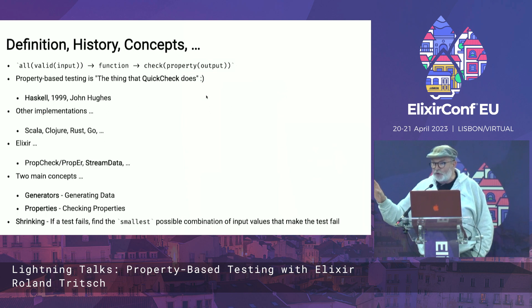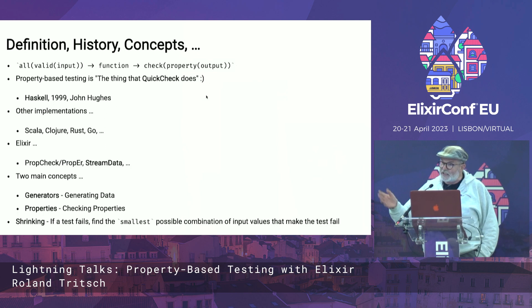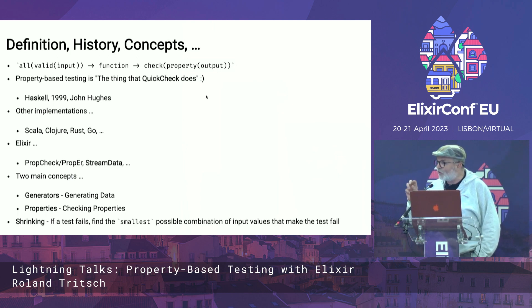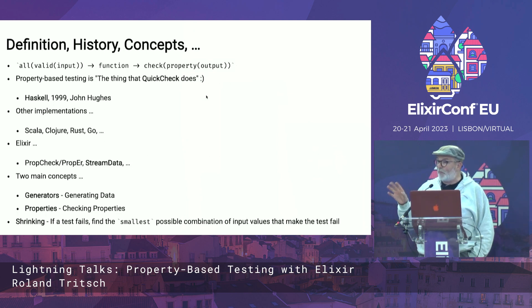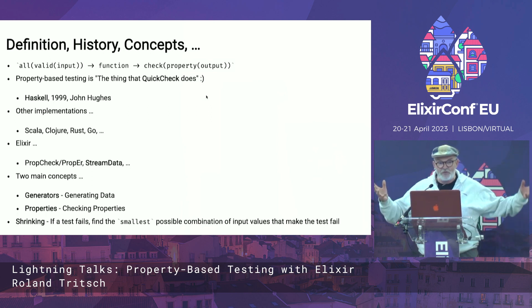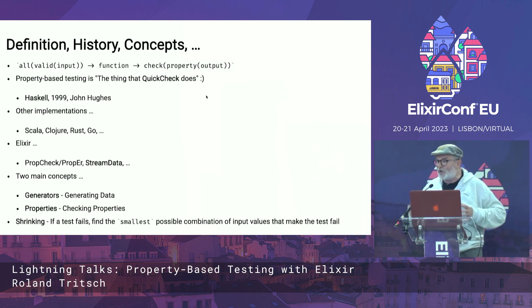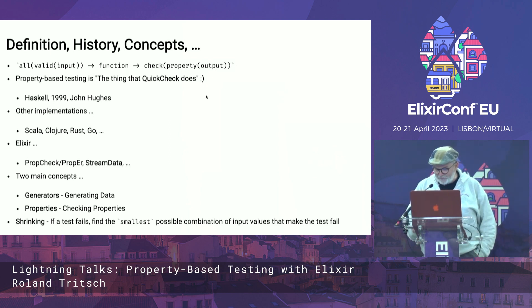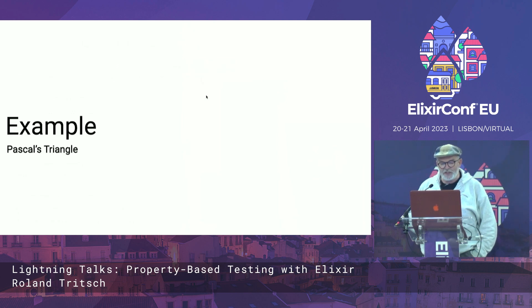The two main concepts in every one of these property-based testing frameworks are generators and properties. Generators create the values; properties check that the properties are good. They actually work together to create a very nice feature of the frameworks called shrinking, because sooner or later one of the tests will fail, but it will probably fail with a very complicated set of input values. Shrinking goes backwards and tries to find the simplest possible set of input values that makes the test fail — a very valuable feature.